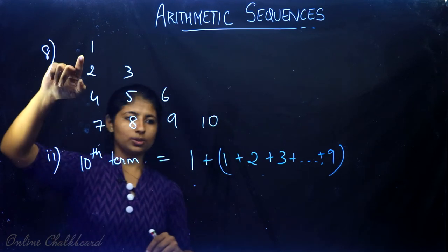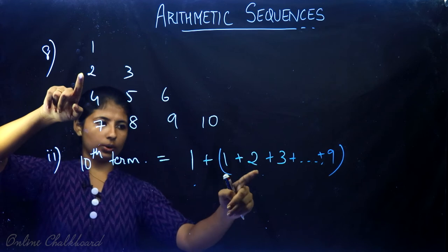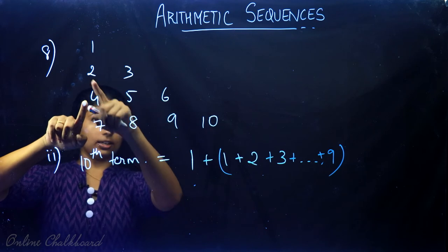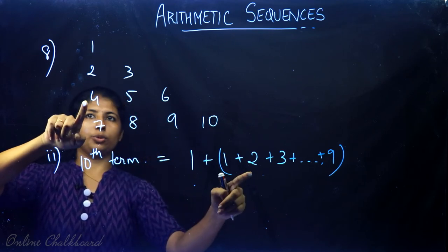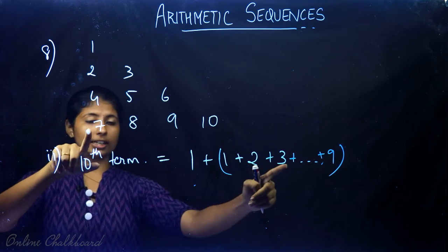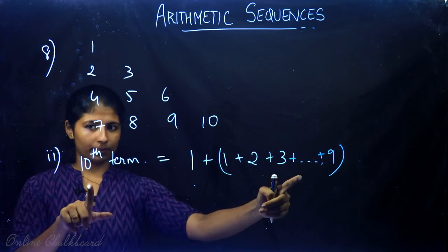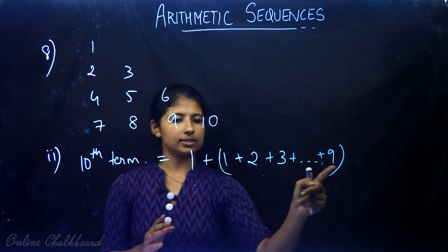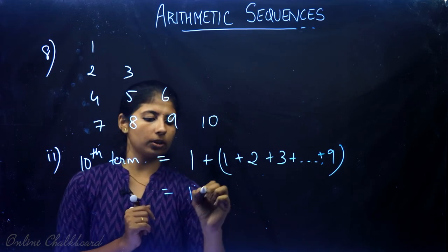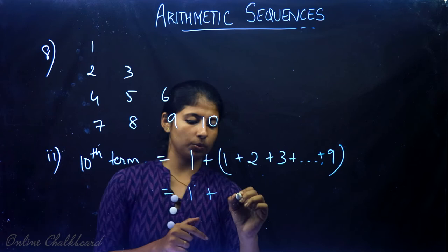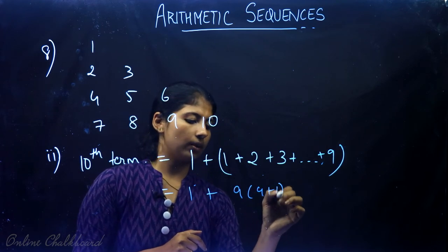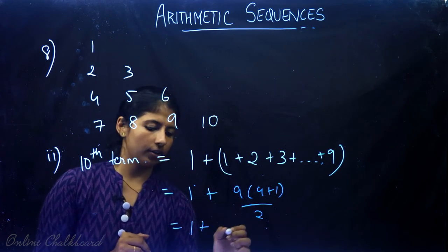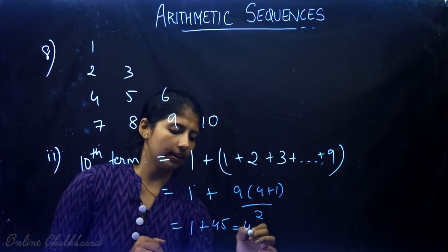Line 1 starts at 1, line 2 starts at 2, line 3 starts at 3 — each line's first term uses the sum of n terms formula: 1 plus n(n plus 1) divided by 2. For the 10th line, the first term equals 1 plus 9 times 10 divided by 2 equals 1 plus 45 equals 46.